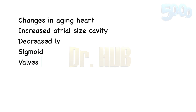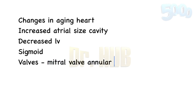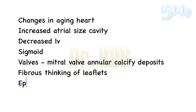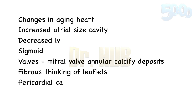Now talking about the valves: the aortic valve has calcific deposits present. The mitral valve has annular calcific deposits and also has fibrous thickening of the leaflets, and there is Lambl's excrescences.